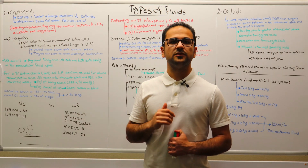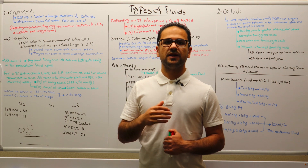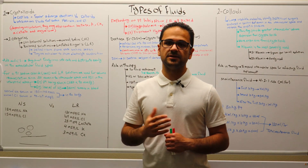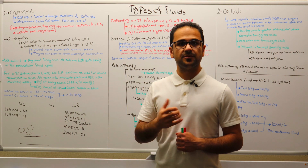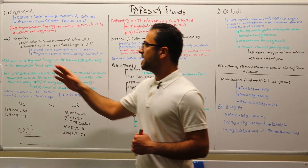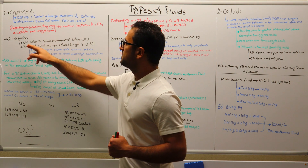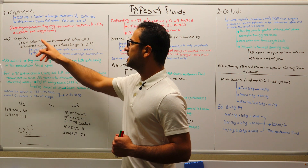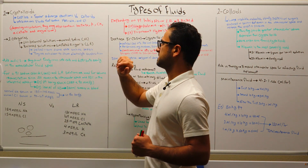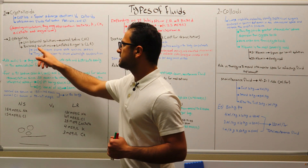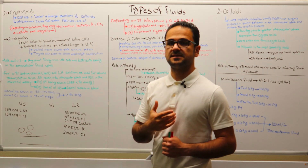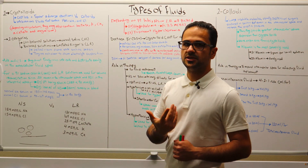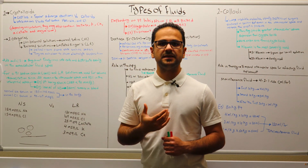Crystalloids are divided into two parts. The first part is used for volume resuscitation, and the second one is not used for volume resuscitation. For those used for volume resuscitation, they are divided into two categories: the unbalanced solution, which is normal saline, and the balanced solution, which is lactated ringers. Lactated ringers are preferred in some diseases today, such as sepsis. They are much closer to the plasma electrolyte composition, which I will explain in a moment.